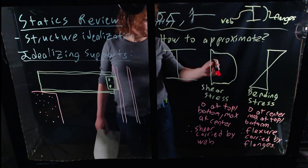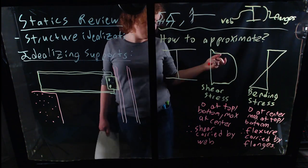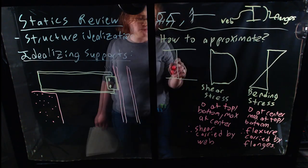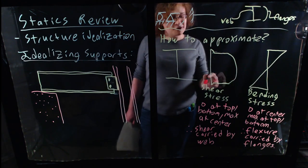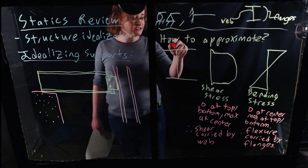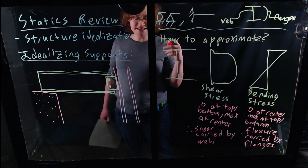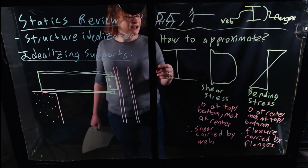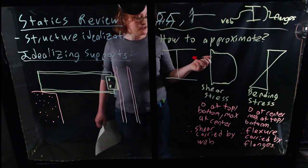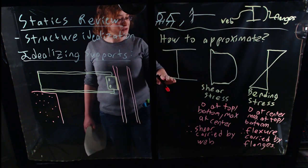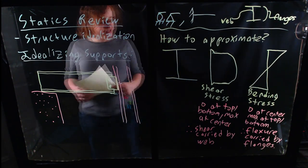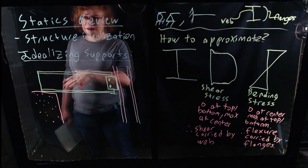Is this entirely correct? No. The flanges do have some non-zero amount of shear stress, meaning they carry some small amount of shear force. And yes, bending stress does occur in the web as well. However, it is a reasonable approximation to say that bending stress in most of the web can be approximated to zero. So it is adequate to say that bending stress is carried by the flanges while shear stress is carried by the web, and we can use that when idealizing our structure.